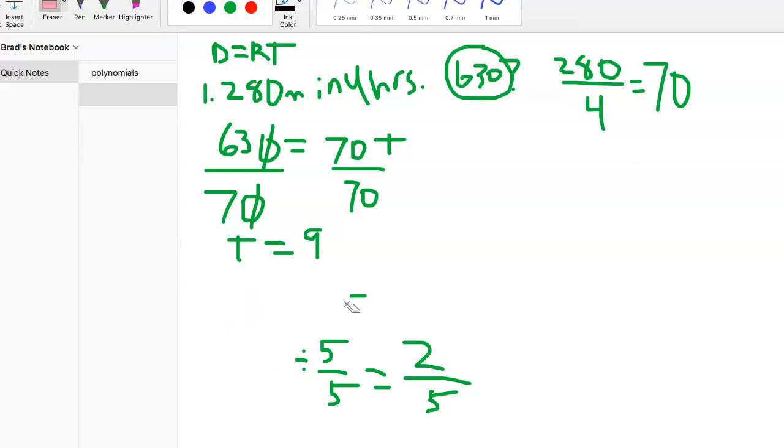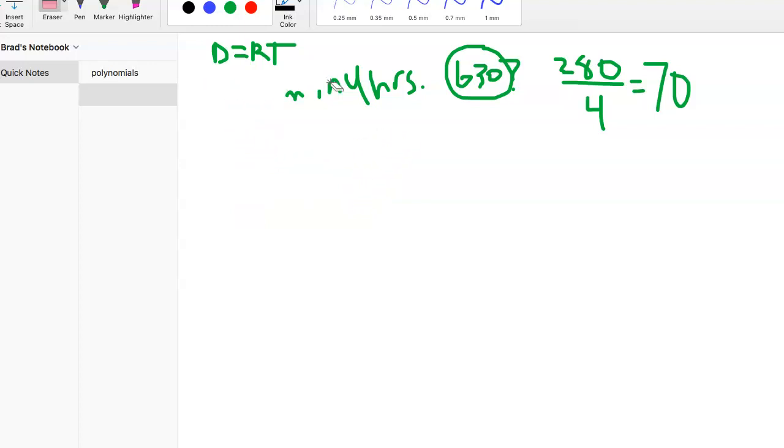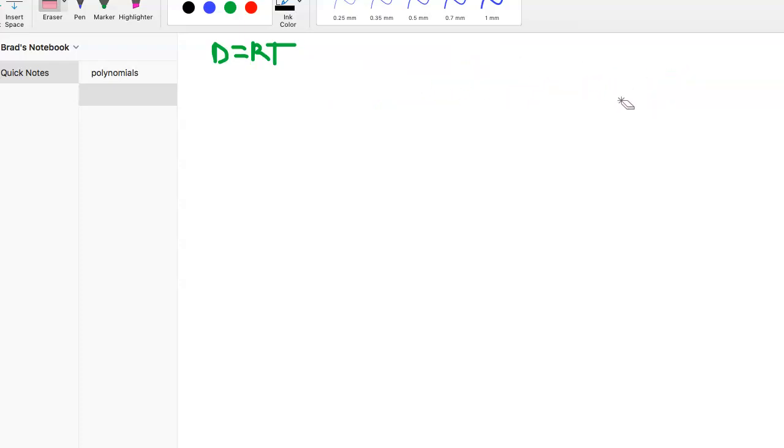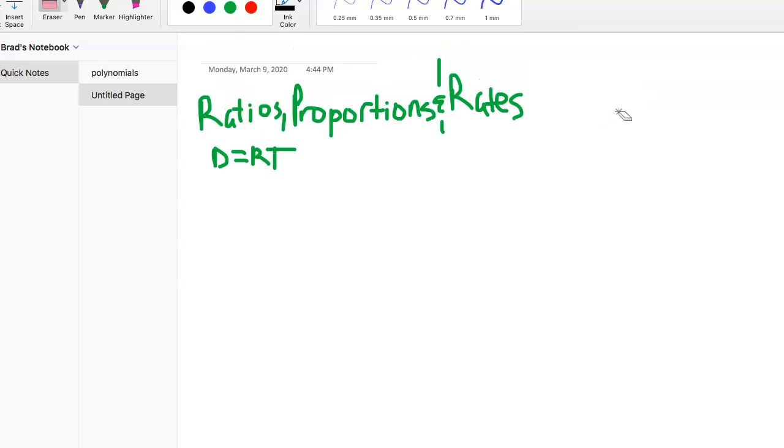That's a ratio question. We got one more question. Back to the marker. Question three: we have two times as many males as females, and they tell us we got 60 people in the class. How many males do we have?